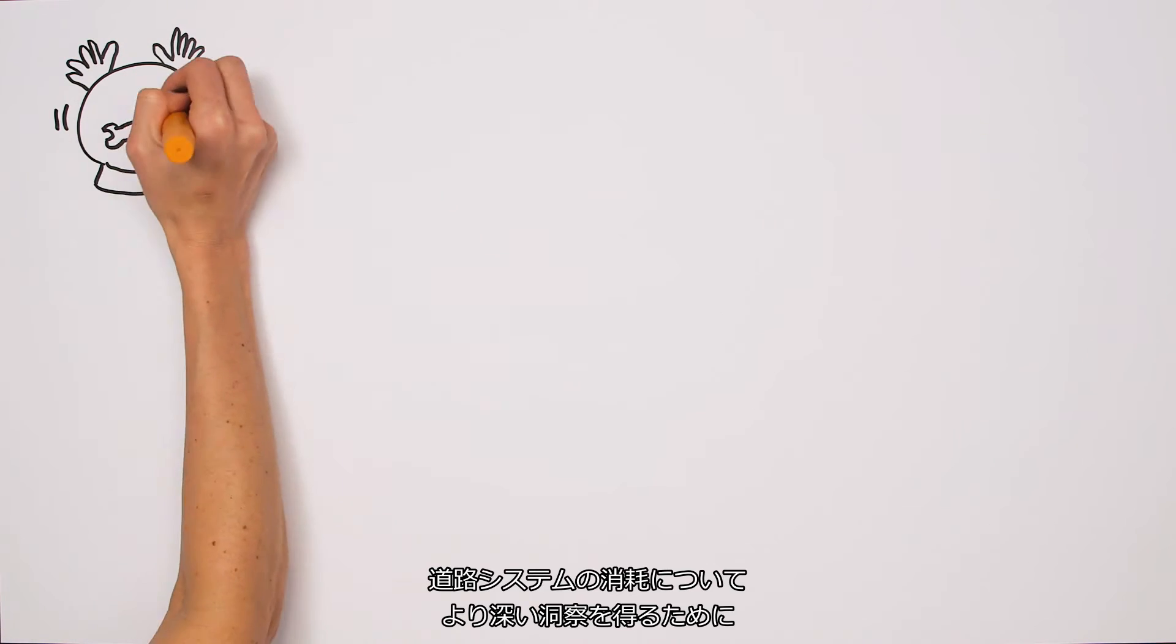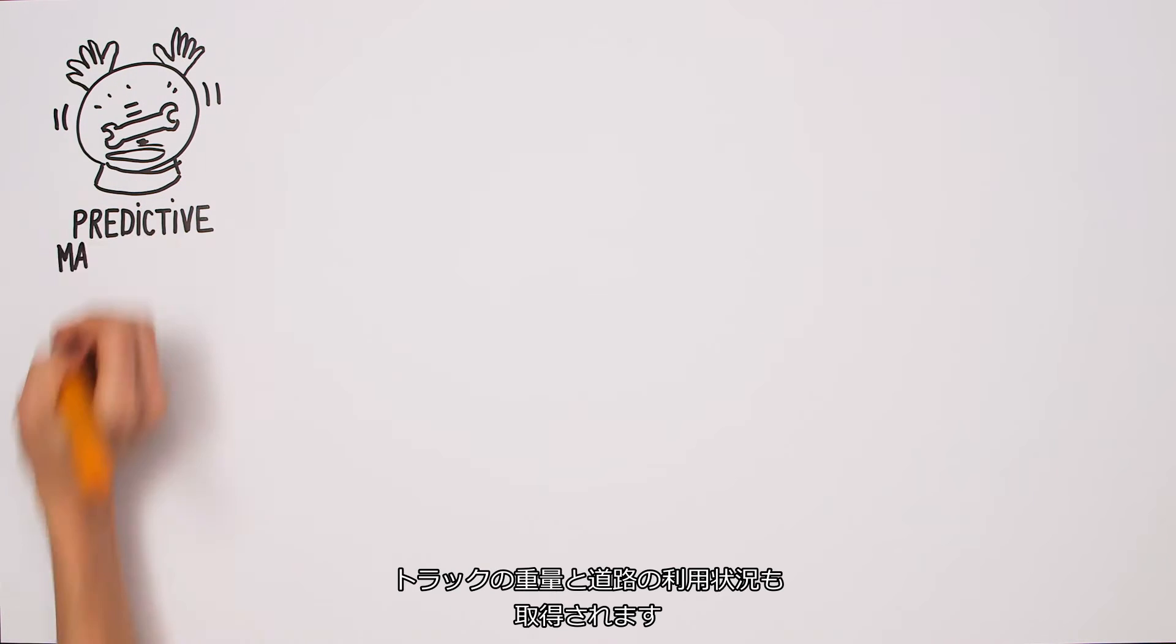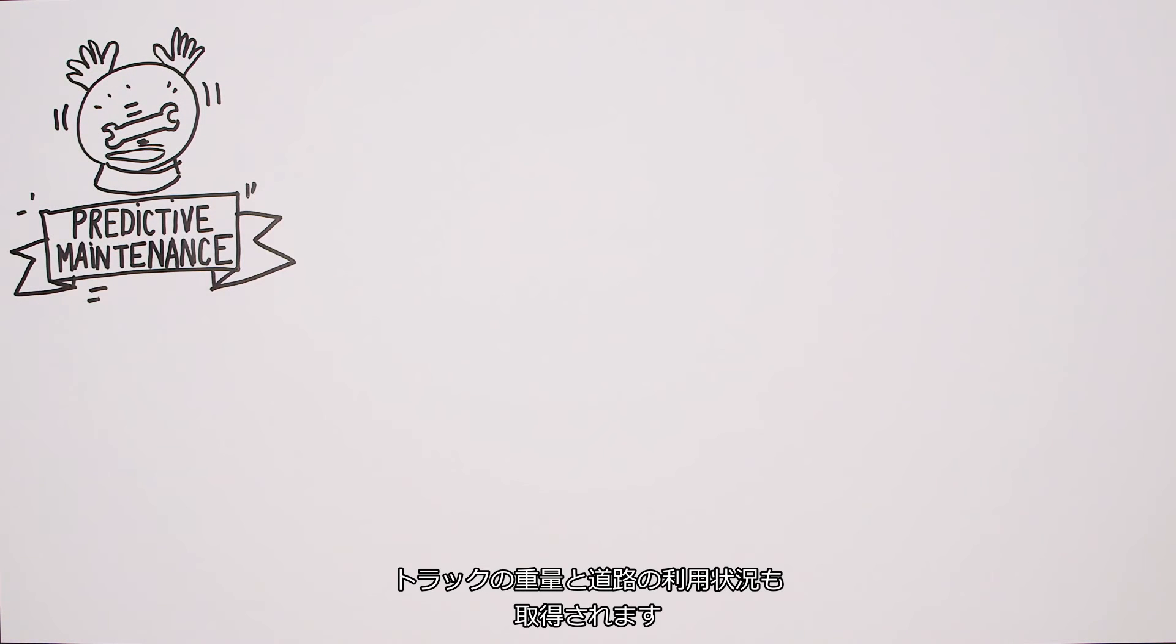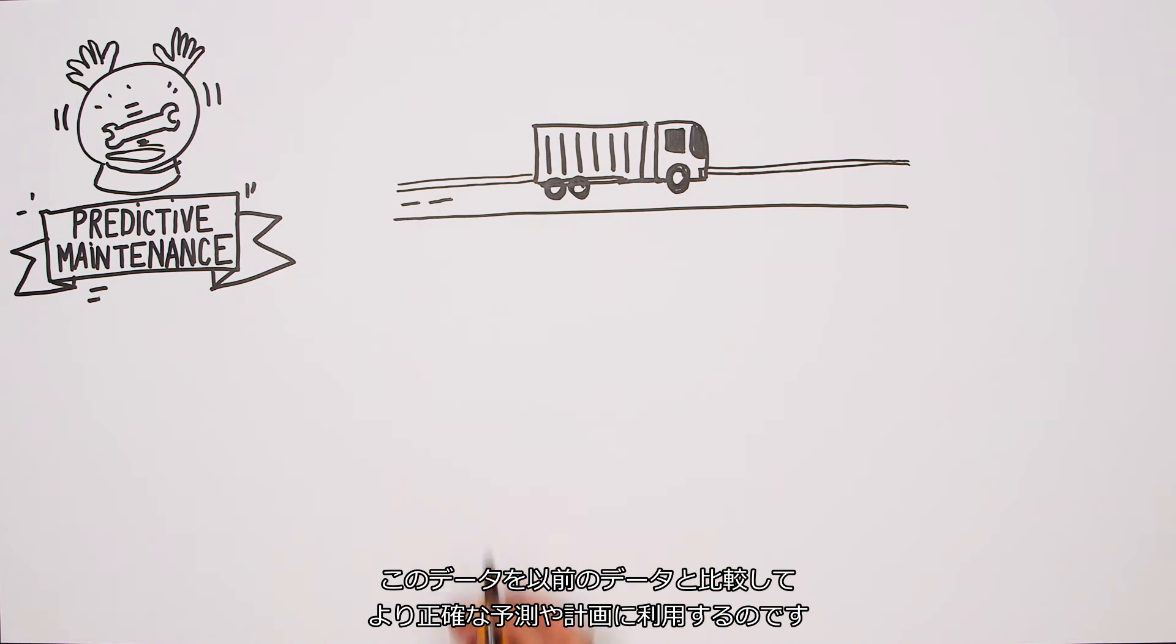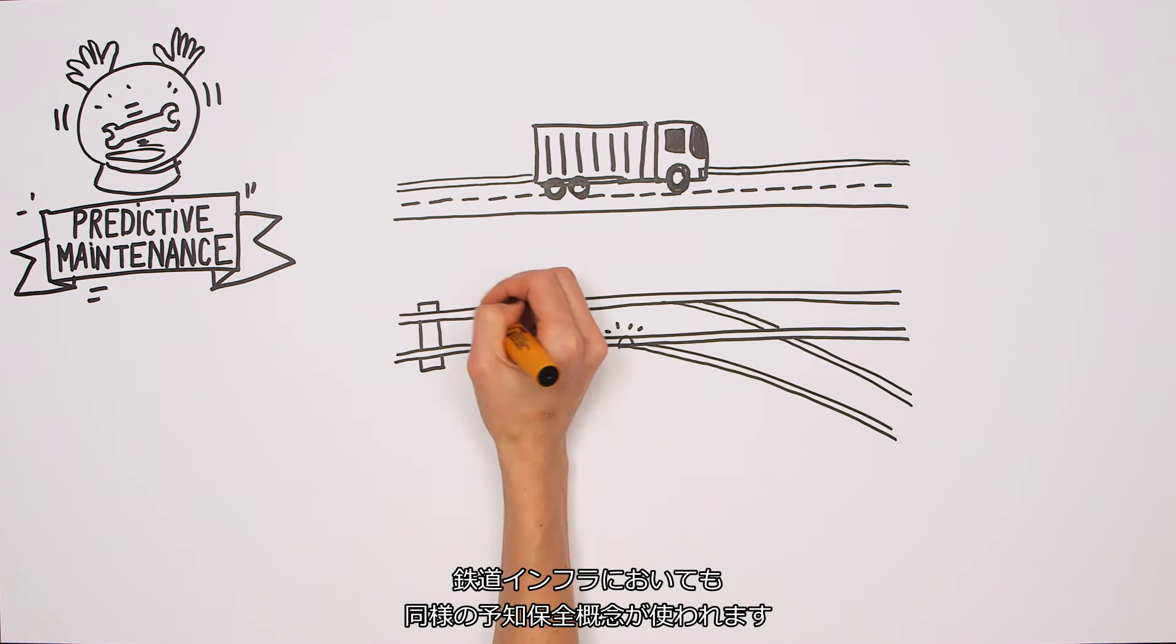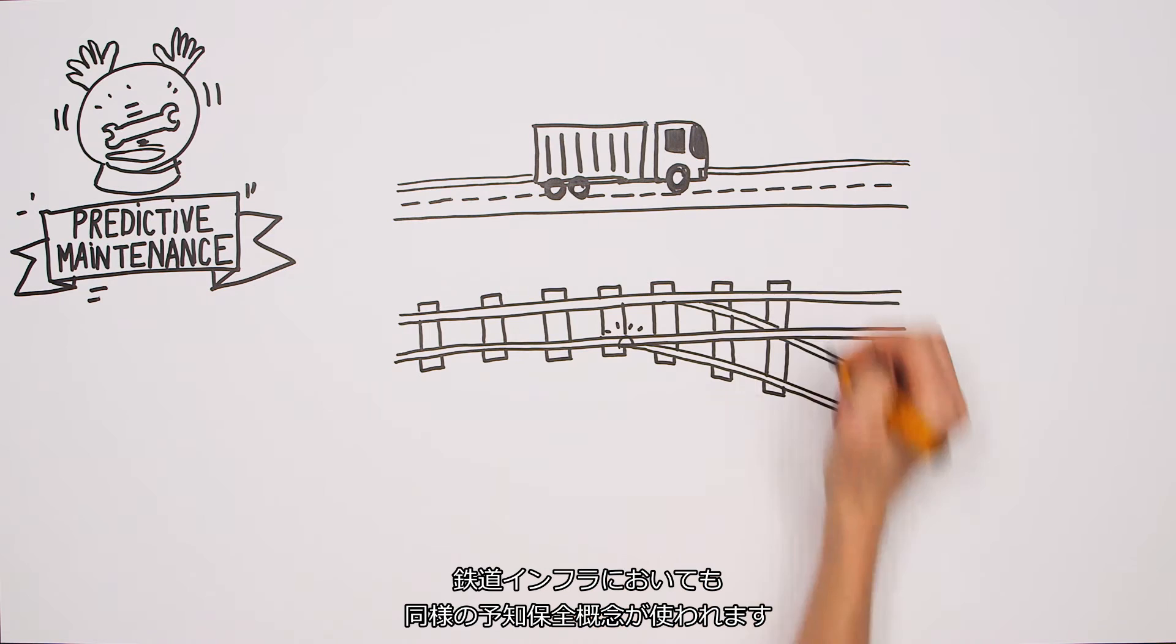To get more insight about the abrasion of the road system, the weight of the trucks and utilization of the roads are captured. This real-time data is analyzed with historic data to predict and plan the construction areas more precisely. For the railroad infrastructure, the same predictive maintenance concept will come into play.